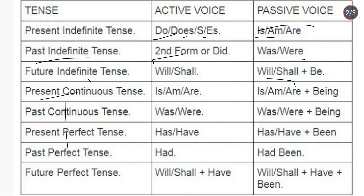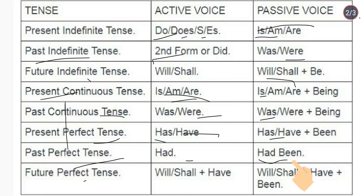Present continuous tense — active uses is/am/are, passive uses is/am/are + being. Past continuous tense — active uses was/were, passive uses was/were + being. Present perfect tense — active uses has/have, passive uses has/have + been. Past perfect tense — active uses had, passive uses had + been.